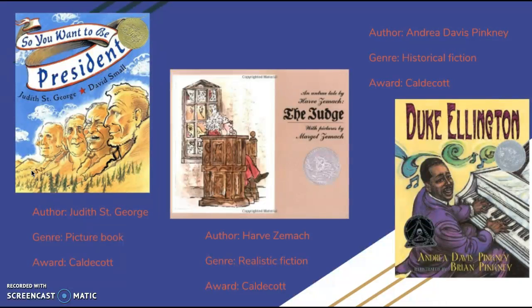Do You Want to Be President? by Judith St. George is a humorous book that gives some tips on what it's like and what to do in order to be president, and it also has very interesting artwork. The Judge by Harve Zemach is a poetic tale about a judge who locks up citizens because he doesn't believe their stories of a terrible creature coming to town. Last, I read Duke Ellington by Andrea Davis Pinkney — it is a colorful tale that tells the story of Duke Ellington, a ragtime artist. The best part is that when you read the story, it sounds as if it's a ragtime song.